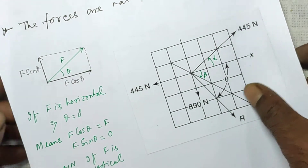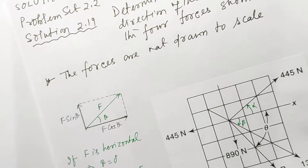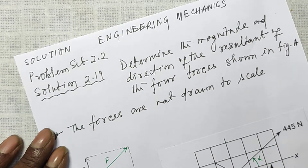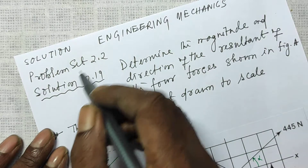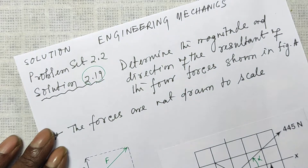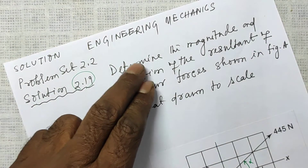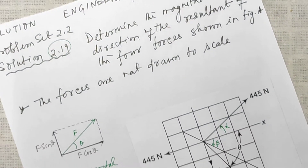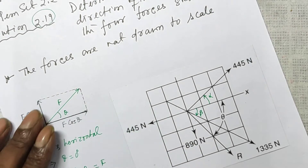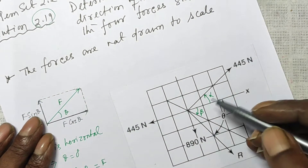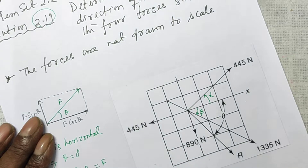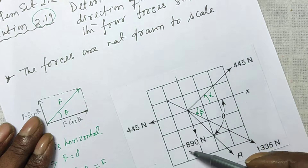Now I'm going to discuss this problem. Problem set 2.2, solution to 2.19: Determine the magnitude and direction of the resultant of the four forces shown in figure A. There are four different forces: 445 Newton, 445 Newton, 1335 Newton, and 890 Newton.